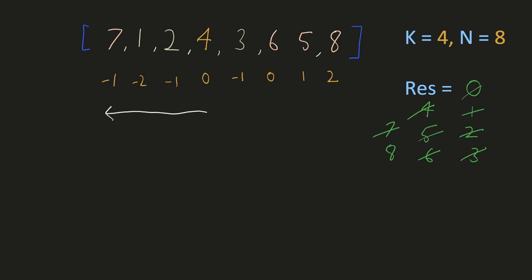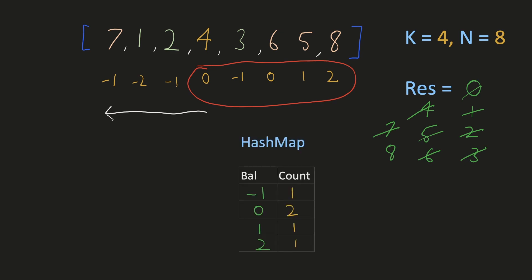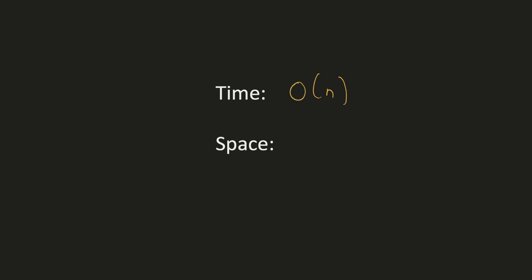We need to maintain the differences on the right and we are only concerned with the number of times each difference has occurred. The best data structure for that is a hash map where the key is the difference and the value is the count. The time complexity is O(n) because we only go through all the numbers once, and the space complexity is O(n) because we use a hash map of size n.